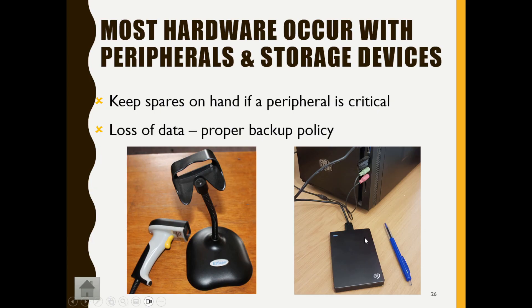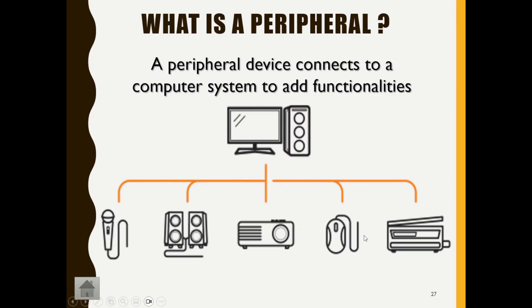A peripheral device connects to a computer system and adds functionality. The computer system is the core unit, and peripherals connect to it — for example, a microphone, speaker, projector, mouse, and printer all add functionality to the computer system. That's your definition of a peripheral, and that's the end of our module on Computer Management.